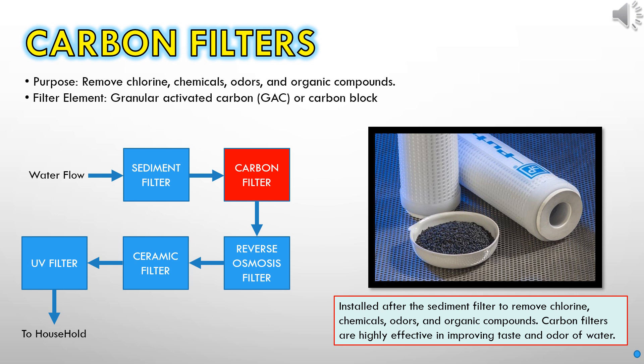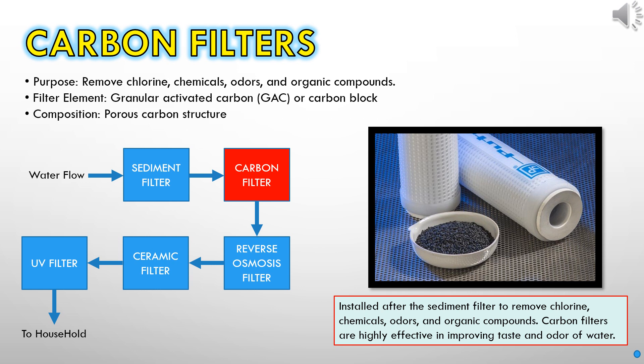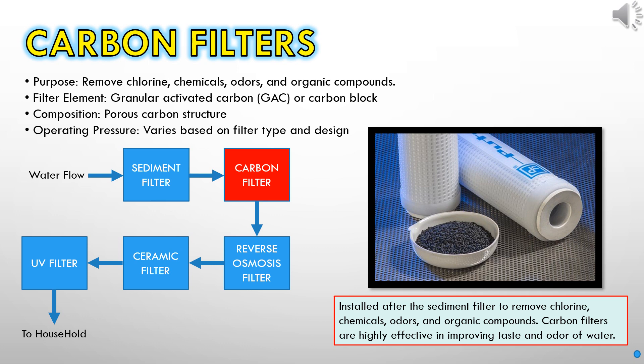The primary filter element utilized for this purpose is granular activated carbon (GAC) or carbon block. These materials feature a porous carbon structure that effectively absorbs and traps impurities. The operating pressure for this type of filter can vary depending on the specific type and design, ensuring optimal filtration performance tailored to the system's requirements.